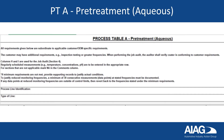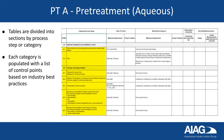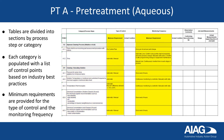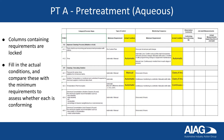Let's walk through some of process table A as an example. First, identify the process line and its type. The tables are divided into sections by process step or category. Each category is populated with a list of control points based on industry best practices. For each control, minimum requirements are provided for the type of control and the monitoring frequency. Columns containing requirements are locked. It is your responsibility to fill in the actual conditions and compare these with the minimum requirements to assess whether each is conforming.